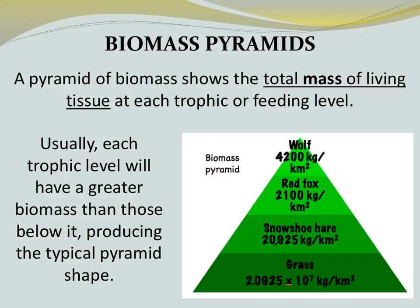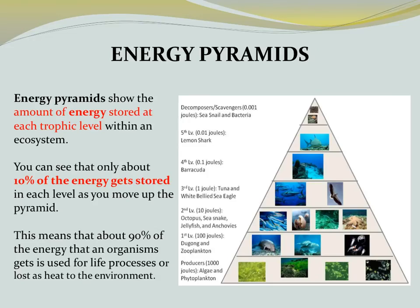A pyramid of biomass shows the total mass of living tissue at each trophic or feeding level. Usually each trophic level will have a greater biomass than those below it, producing the typical pyramid shape. These pyramids depend on the amount of flesh, or living material of producers, to build the shape. An energy pyramid shows the amount of energy stored at each trophic level within an ecosystem. Only about 10% of the energy gets stored in each level as you move up the pyramid, meaning about 90% is used for life processes or lost as heat to the environment.